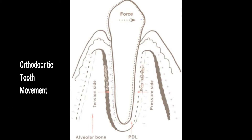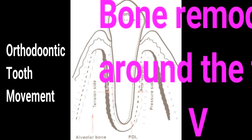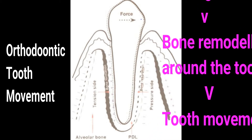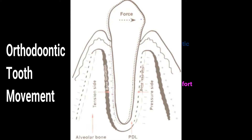Orthodontic treatment is made possible by the fact that teeth can be moved through the alveolar bone by applying appropriate forces. Orthodontic tooth movement is a unique process where a solid object — the tooth — is made to move through a solid medium — bone. This is possible because whenever a prolonged force is applied on a tooth, bone remodeling occurs around the tooth, resulting in its movement.